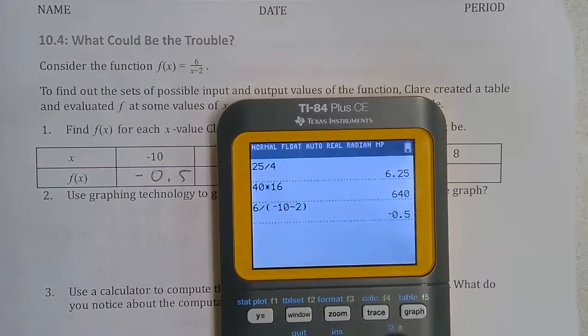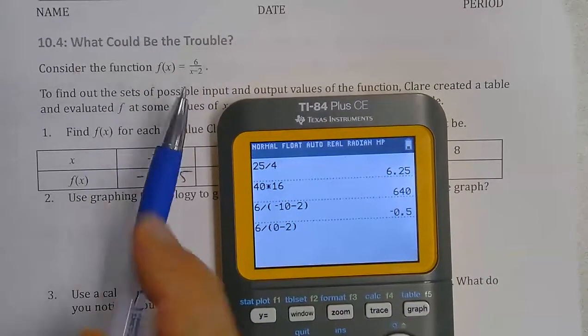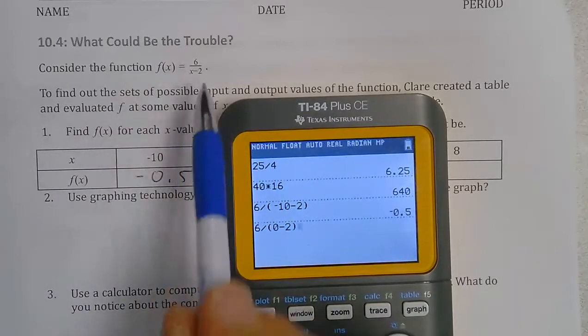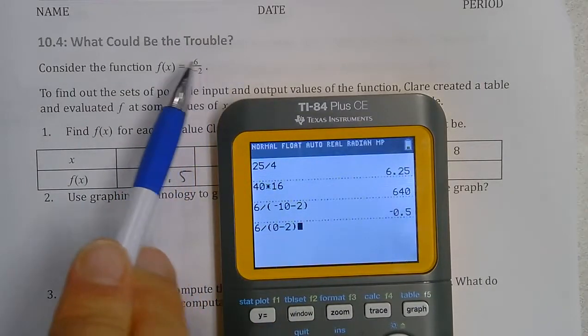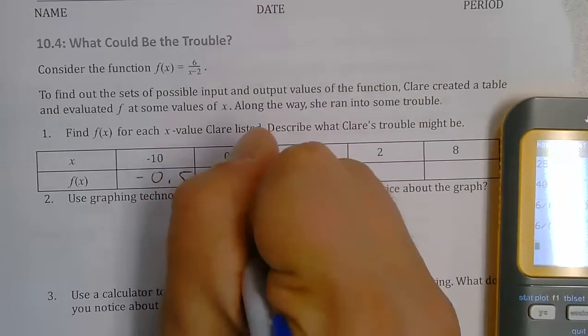Here, if I put 6 divided by 0 minus 2. And again, I'm using parentheses because this division bar is a grouping symbol. So we do x minus 2 first, and then take 6 divided by our answer. That gives me negative 3.